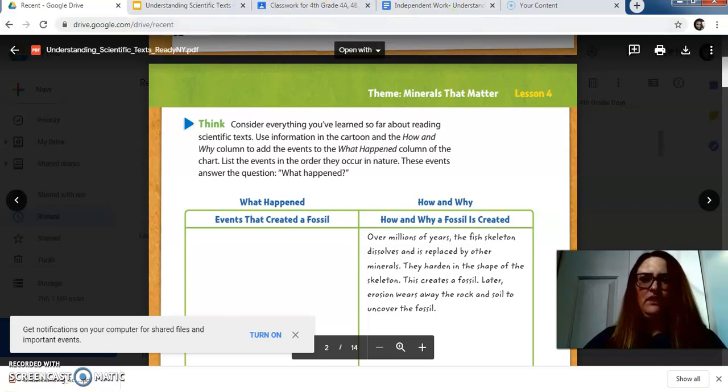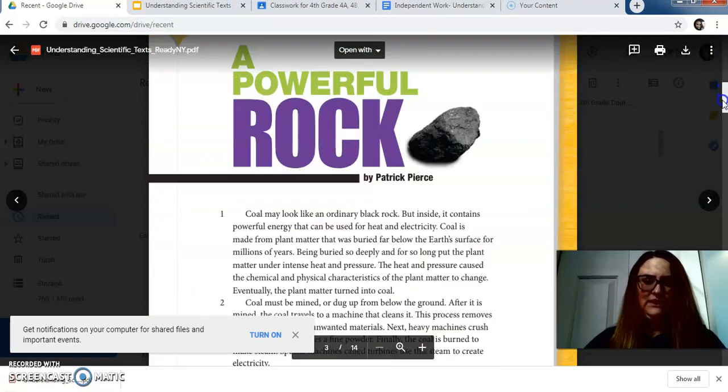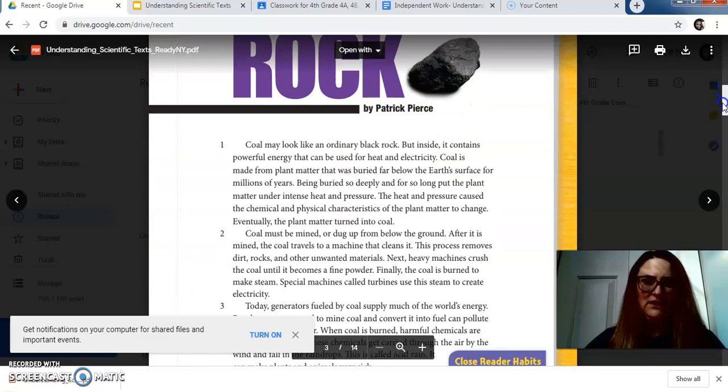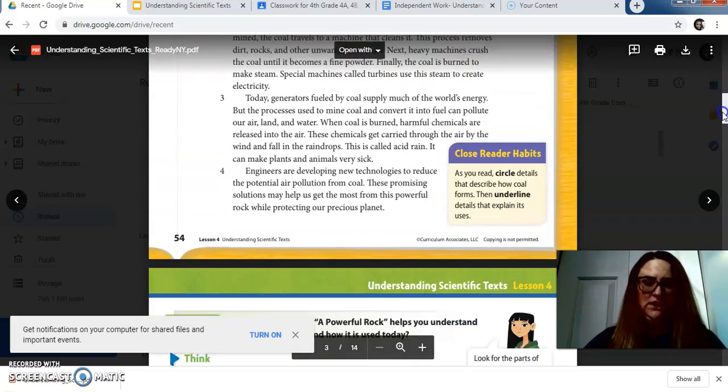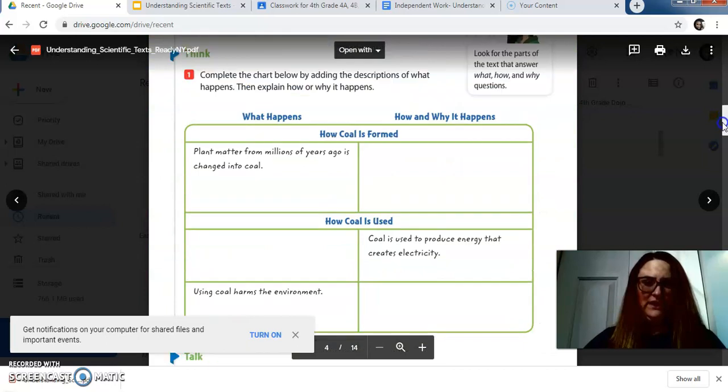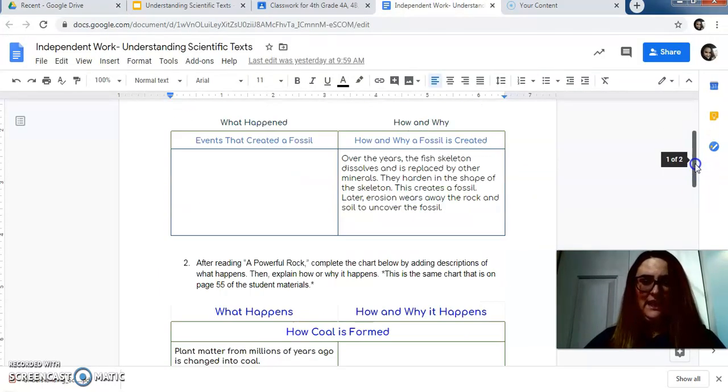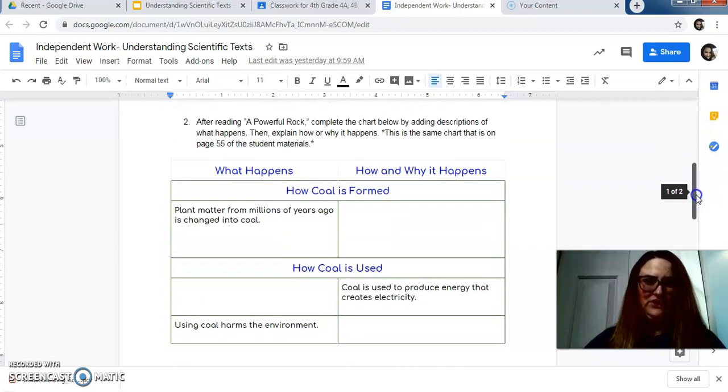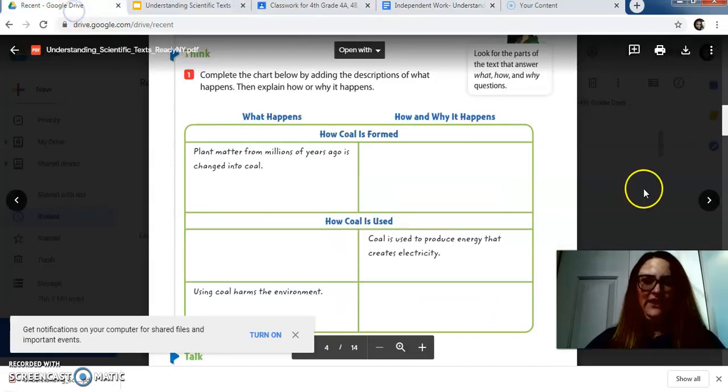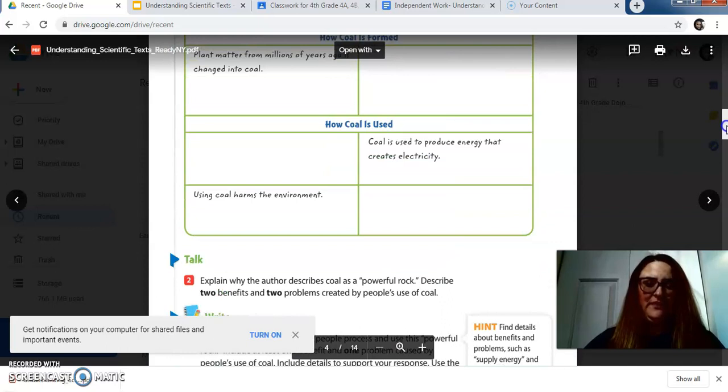After you do that, you're going to read this text, A Powerful Rock, about coal. And you are going to complete this chart, which is also replicated on your Google Docs, so it looks just like this. If you want to look back in the text to make it easier for yourself, by all means, please do that.